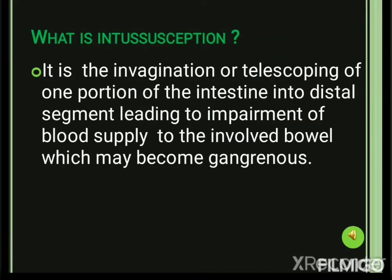What is intussusception? It is the invagination or telescoping of one portion of the intestine into a distal segment, leading to impairment of blood supply to the involved bowel, which may become gangrenous. The proximal part of the intestine enters into the distal part, reducing blood supply to that involved part, leading to gangrene formation in the telescoped region — that is called intussusception.